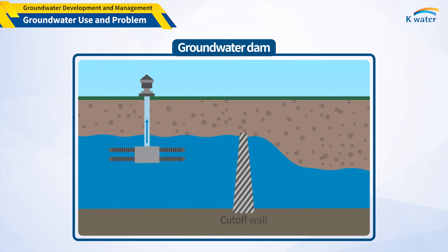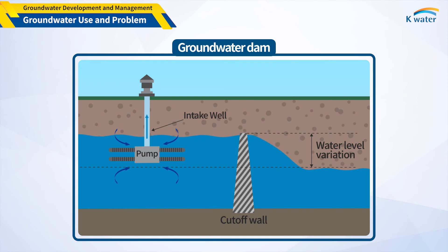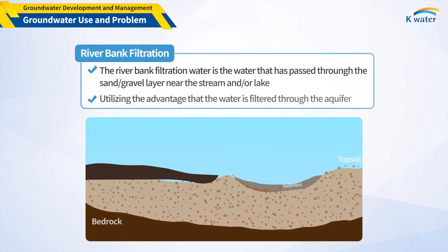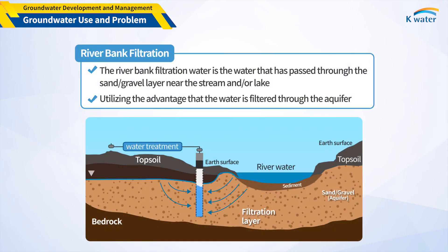Groundwater dams are installed across rivers or valleys formed with good materials such as sand and gravel. Unlike surface dams, they are built underground so the cut-off wall is invisible. When the cut-off wall is built, the groundwater level rises, allowing more water to be collected than using normal wells, and they are more eco-friendly than surface dams. Around large rivers, riverbank infiltration projects install large diameter or horizontal collector wells to collect groundwater that has been filtered through sand-gravel layers near rivers and lakes.